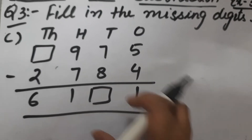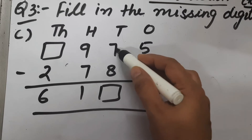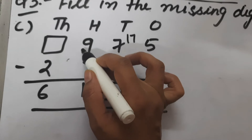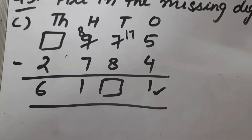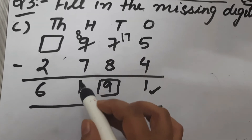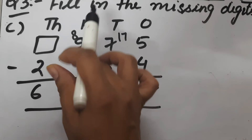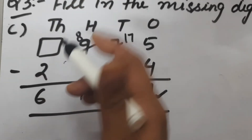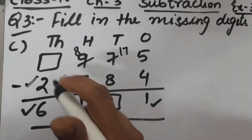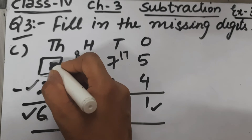Now let's start part C. We have to find the missing digits. 5 minus 4 is 1. Now 7 minus 8 is not possible, so we borrow 1 — it becomes 17. 17 minus 8 is 9, and 8 minus 7 is 1. To find the minuend, we add the subtrahend and the difference. So we add 6 and 2 to get 8.